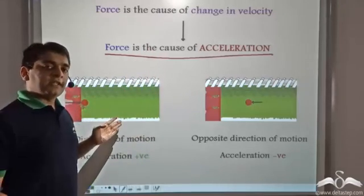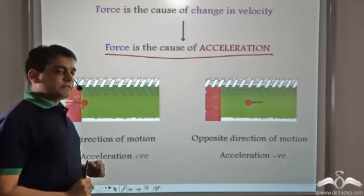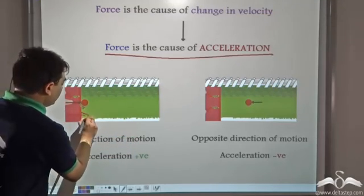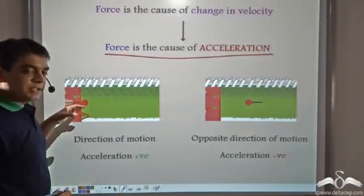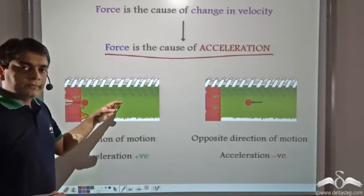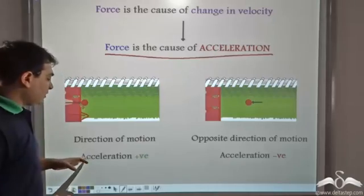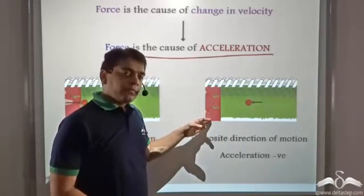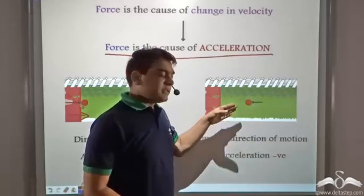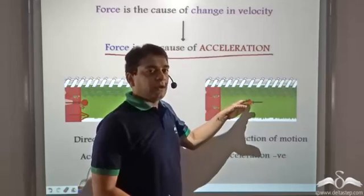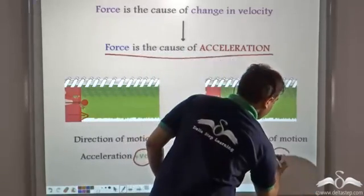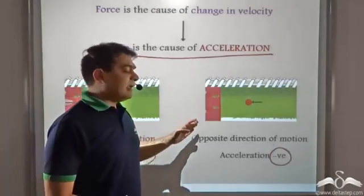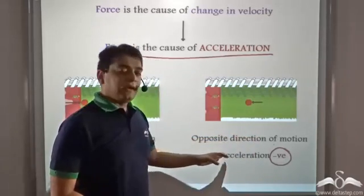Now, what does the direction of force have to do with acceleration? When the direction of force is in line with the direction of motion — that is, when we kicked the ball in this direction — we saw that the velocity of the ball increased from zero to a positive value, so acceleration was positive. In the second case, when friction was acting on the moving ball, since friction acts in the opposite direction of motion, the frictional force reduced the velocity of the object. Hence, the acceleration was negative. So when the direction of force is in line with motion, acceleration is positive; when opposite to motion, acceleration is negative.